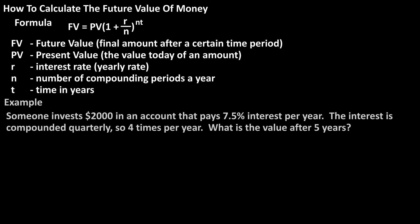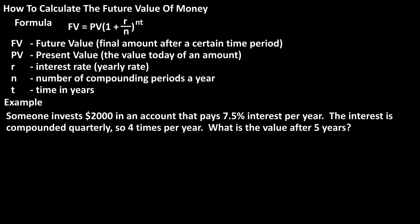As an example, let's say that someone invests $2,000 in an account that pays 7.5% interest per year. The interest is compounded quarterly, so 4 times per year. What is the future value amount after 5 years?